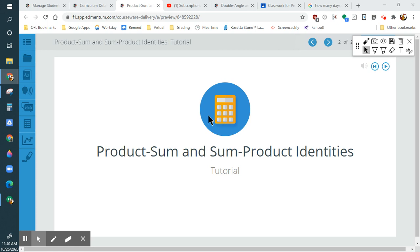Alright, so this one's going to be product-sum and sum-product identities. As you can tell, this one we're probably going to be multiplying trig functions that involve adding angles or vice versa.